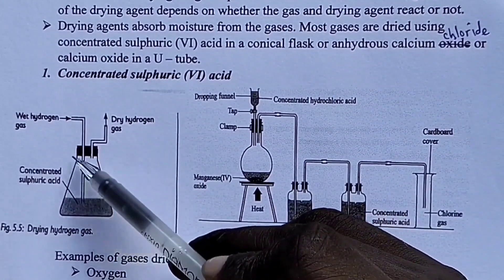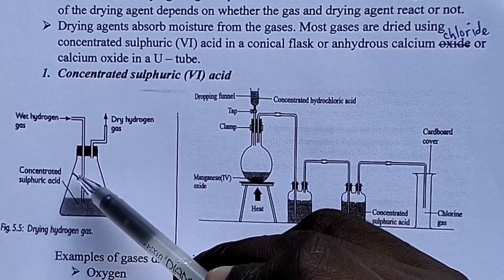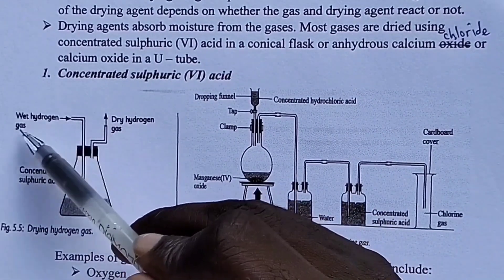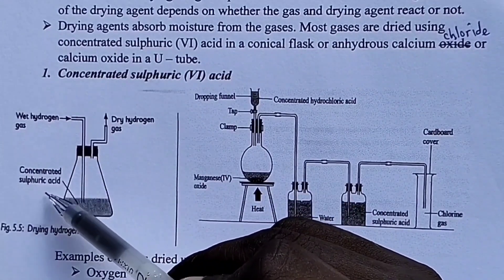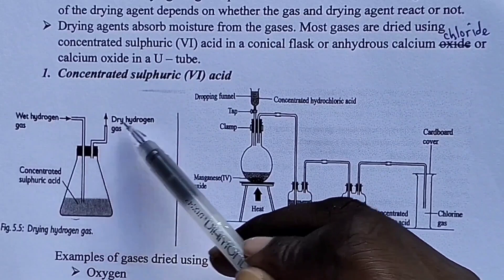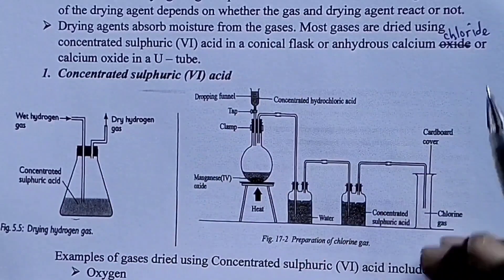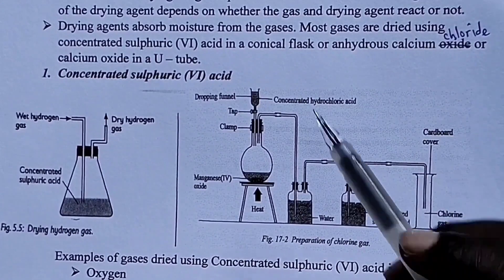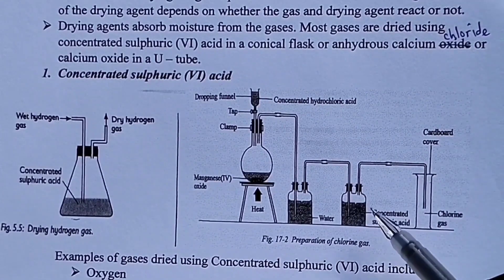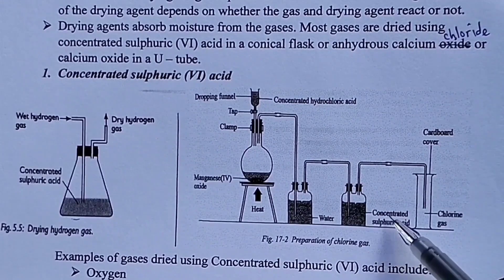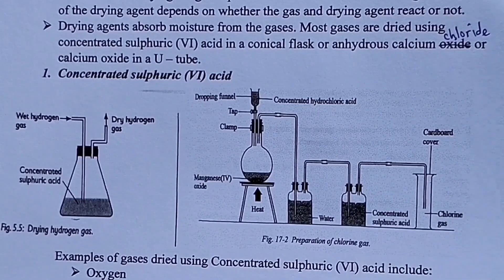This is how the setup looks. We have concentrated sulfuric acid in a conical flask. Here we have wet hydrogen gas or a wet gas entering. When it is dried using concentrated sulfuric acid, we obtain dry hydrogen gas or the dried gas. This is a sample where we have a laboratory preparation of chlorine gas. This chlorine gas is dried using concentrated sulfuric acid, placed in a Woulfe bottle or aspirator.